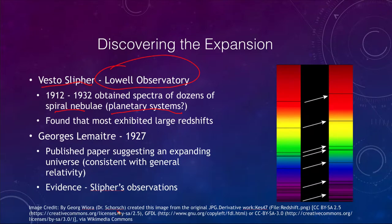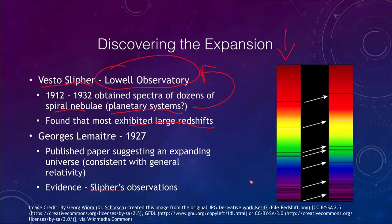He was looking for planetary systems — that was something that the Lowell Observatory was concentrating on. He was obtaining the spectra of these, and what he found is that most of them exhibited large redshifts. What he'd see is the pattern you should expect for the spectral lines, but the patterns were all shifted to the red. As you may recall from the Doppler effect, this means that the galaxies are moving away from us.